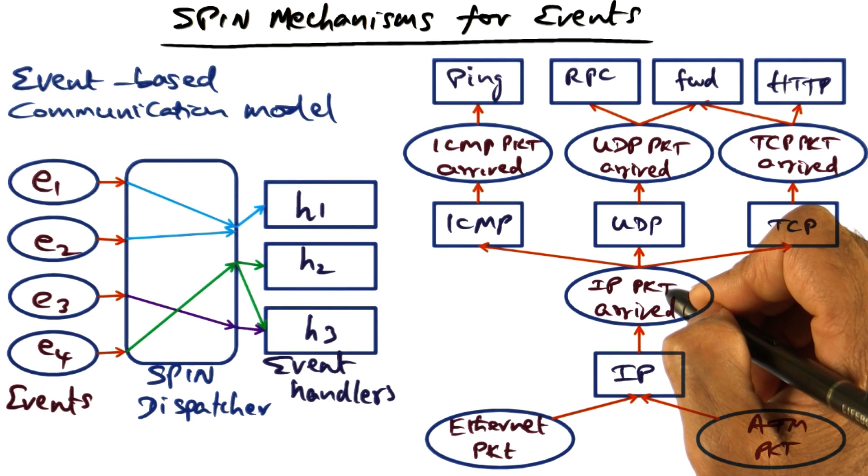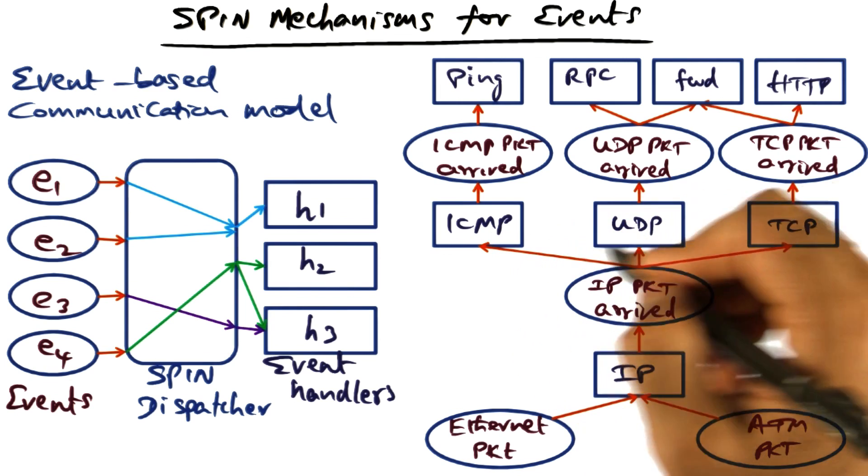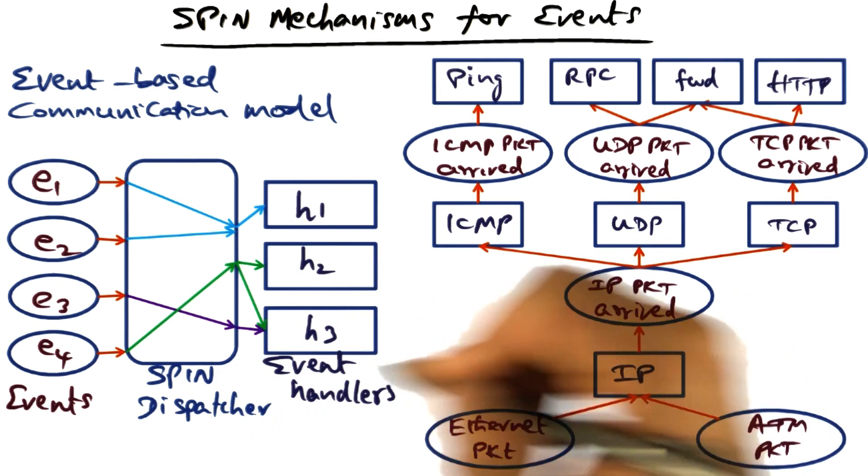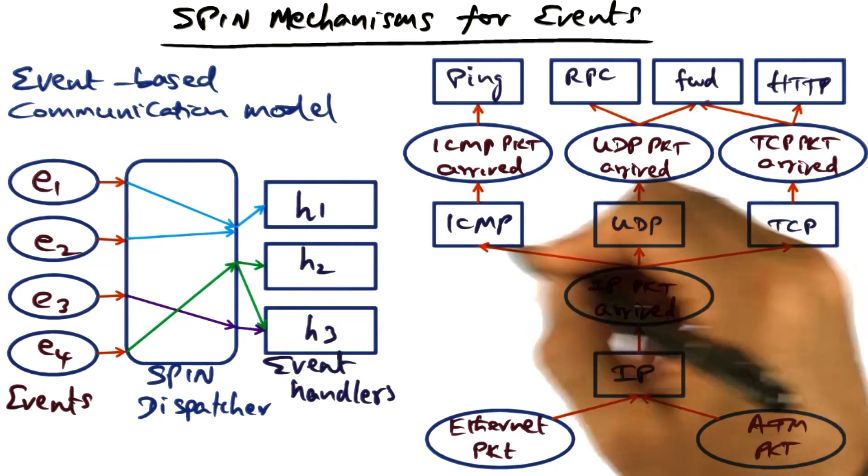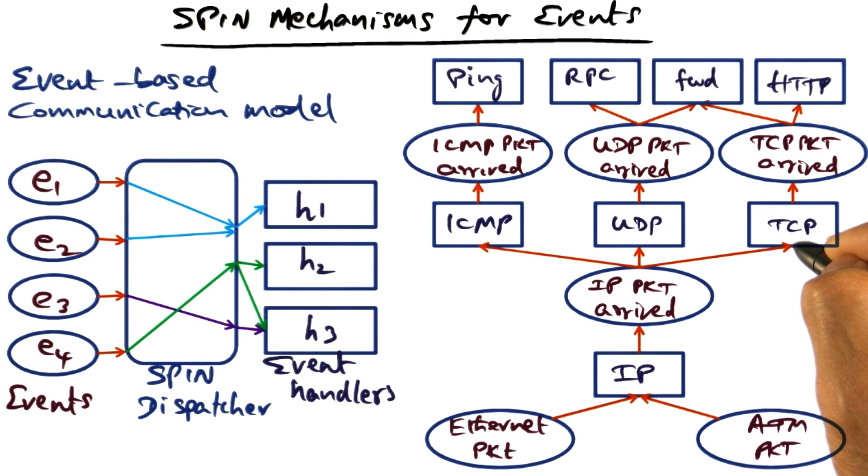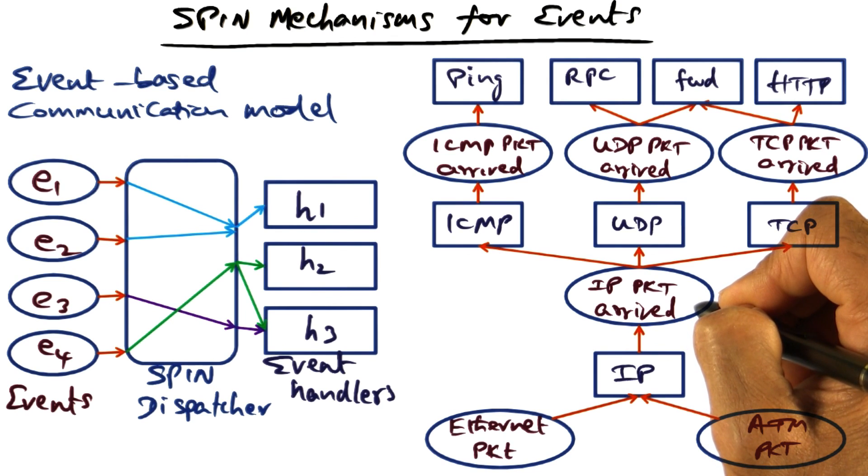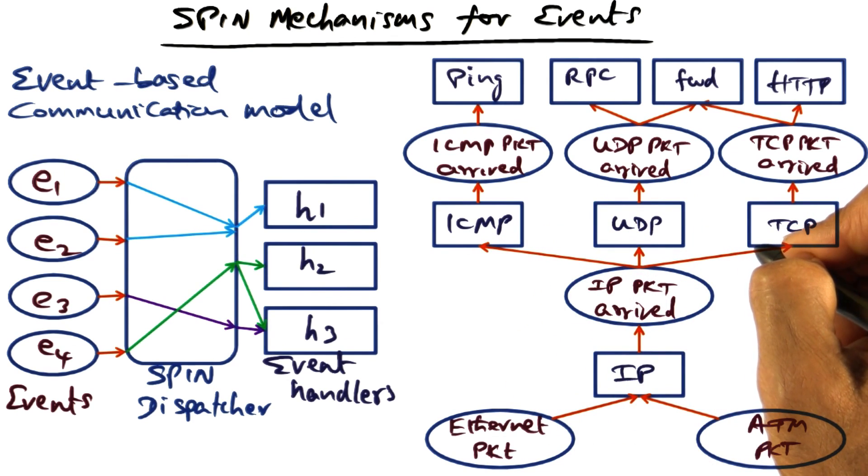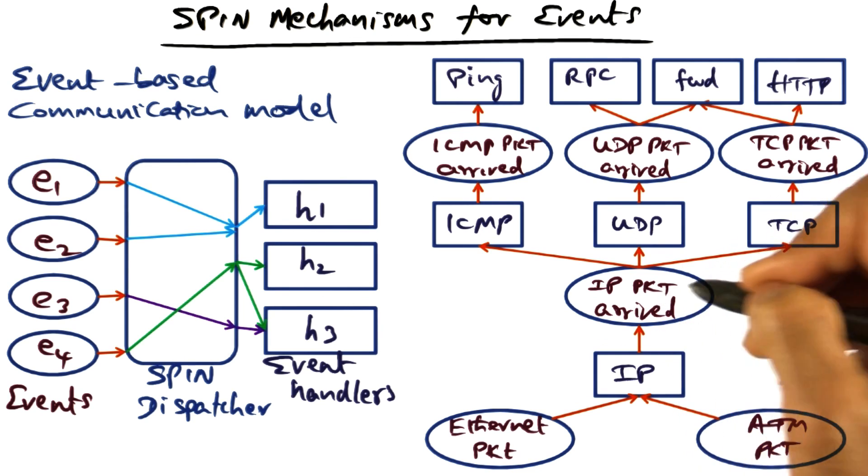The SPIN dispatcher allows any number of handlers to be registered as handling a particular event type. When that event type is raised, all the handlers associated with that event type will get scheduled by the SPIN dispatcher. The order in which they get scheduled is not something that the designer can count on, because SPIN has freedom in the order in which these event handlers may get scheduled. However, all the handlers associated with an event will get triggered when that event is raised.